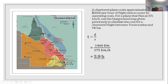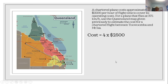They charge two and a half thousand dollars an hour. You could round up to 4 hours giving 4 times $2500, but more exactly, multiply by 3.9 hours: 3.9 times $2500 gives $9,750. That's the estimated cost of the flight.